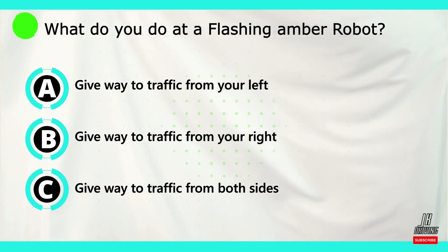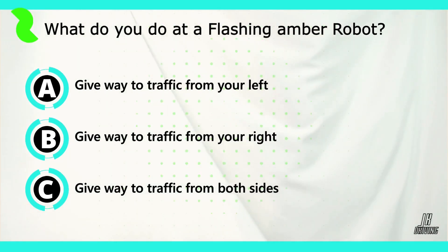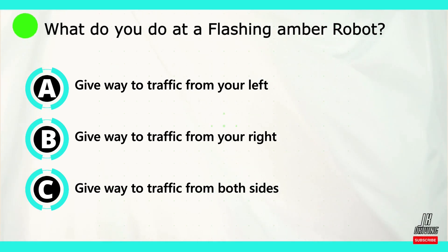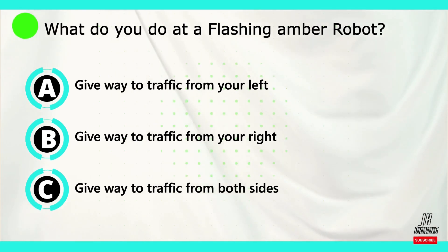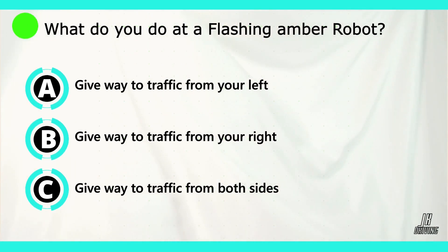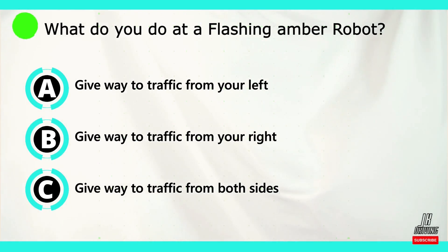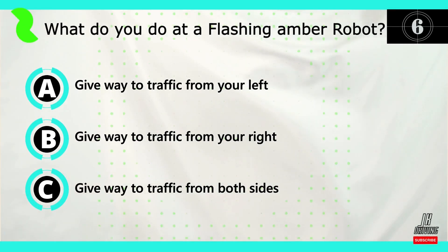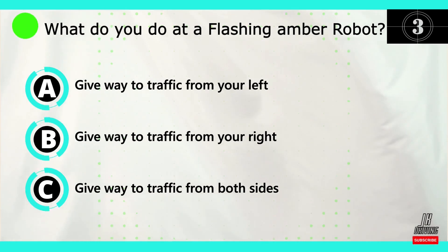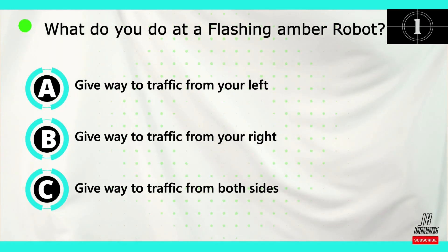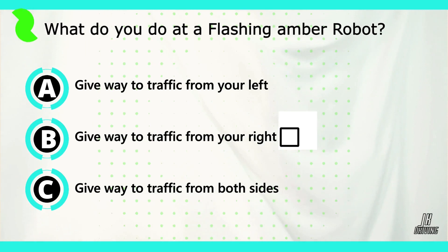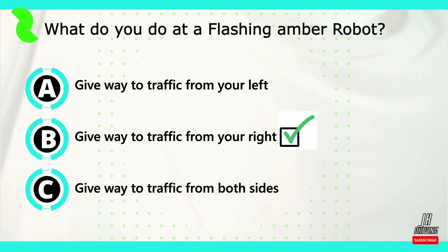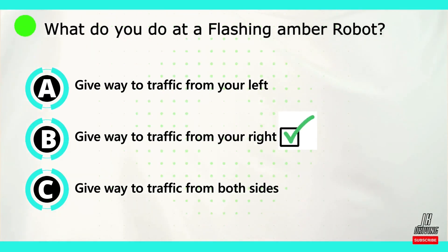Question number three: what do you do at a flashing amber robot? Option A: give way to traffic from your left. Option B: give way to traffic from your right. Option C: give way to traffic from both sides. The correct answer is B — at a flashing amber robot, give way to traffic from your right.